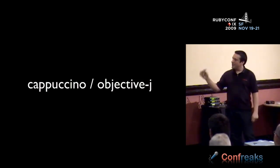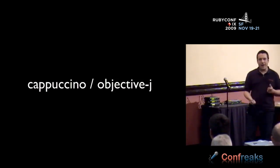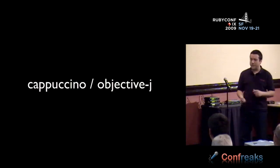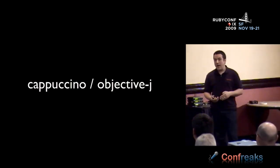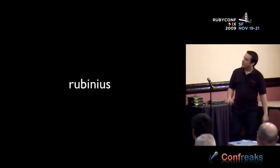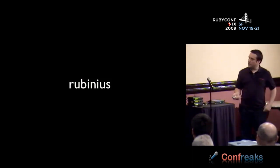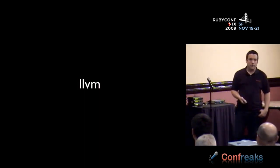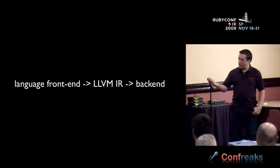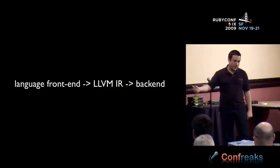A slightly different take that I won't make fun of because it's actually kind of cool is Cappuccino. They have Objective-J in the browser — it's a bit more like Objective-C, a superset of JavaScript. So you actually don't have to bridge if you don't want to; you can just write JavaScript directly. This last one is definitely not pragmatic, but it's a more forward-looking way of thinking. In Rubinius, a Ruby implementation built on LLVM — the low-level virtual machine — which is a compiler toolkit.